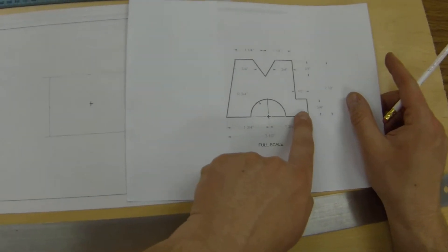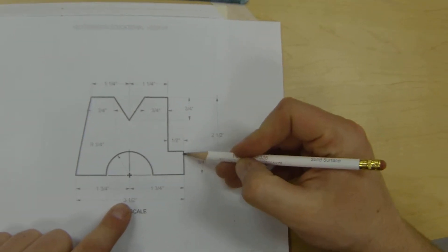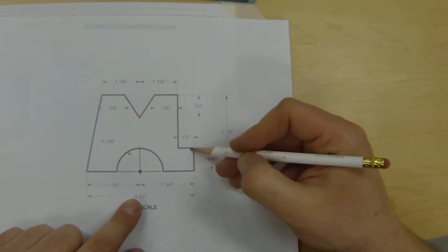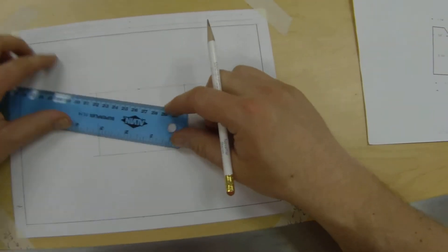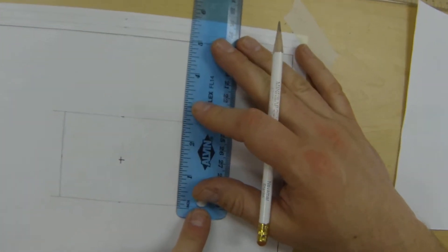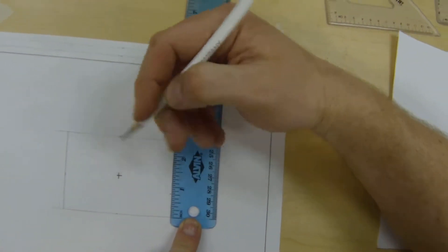We're going to start with this lower right hand side here and we're going to use some measurements. I'm going to need to measure and mark three quarters of an inch up, half of an inch in. So I'm going to take my ruler and we're going to start with our three quarter measurement first, measure mark three quarters.